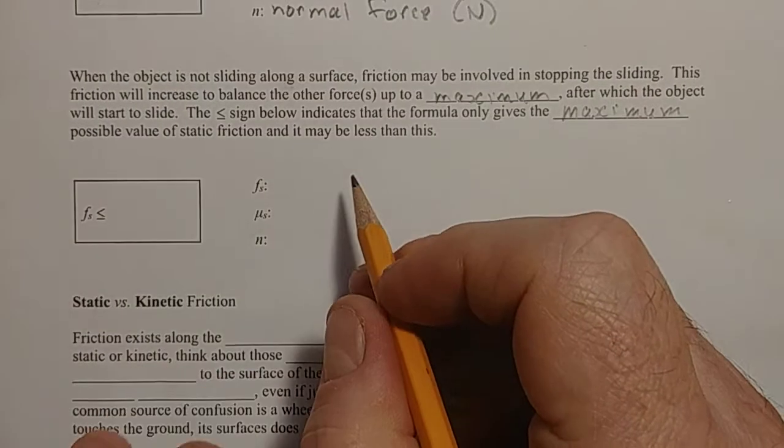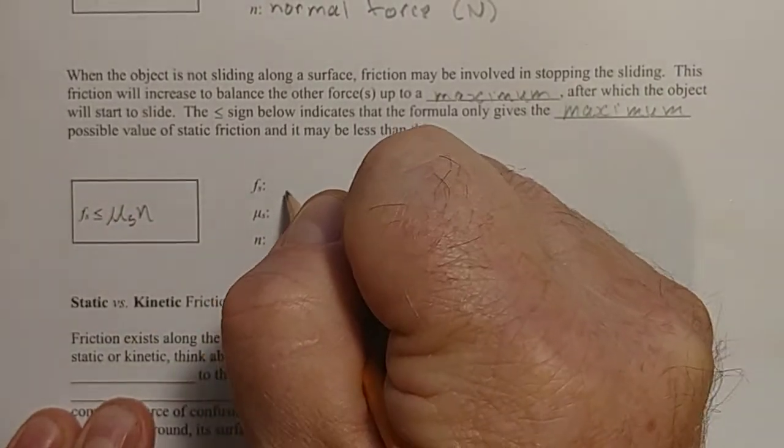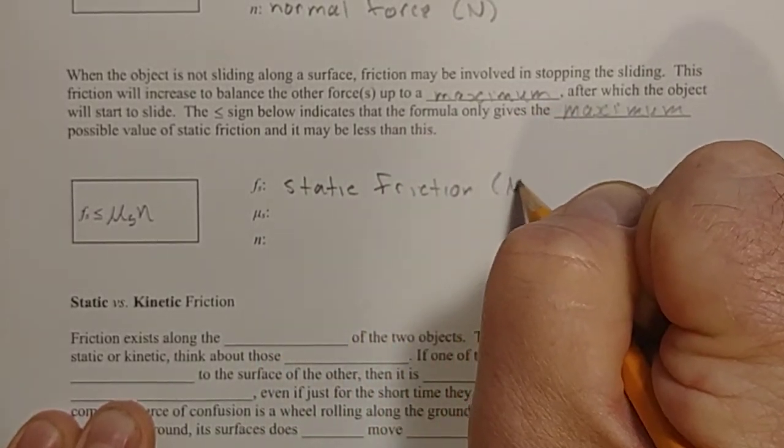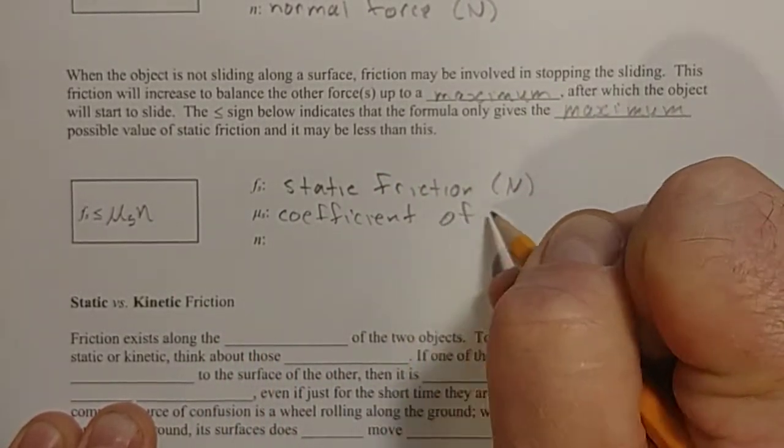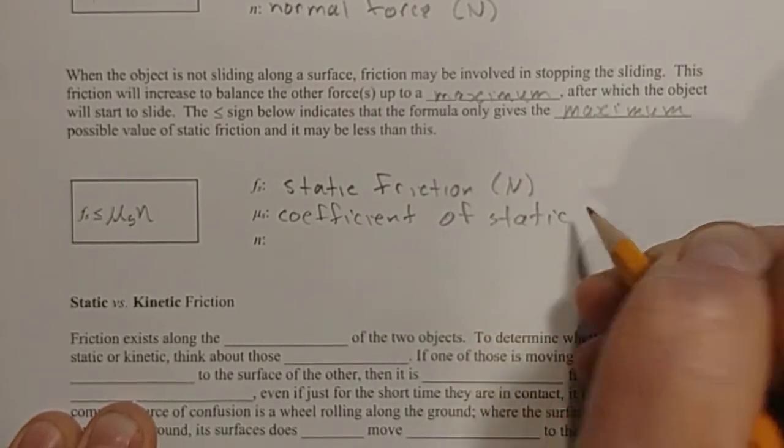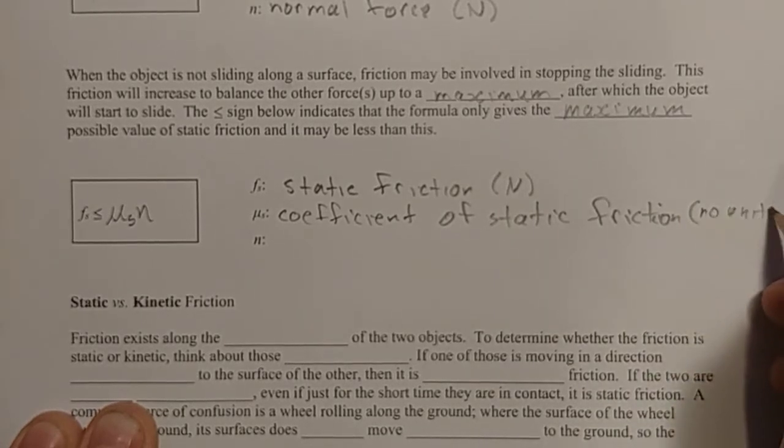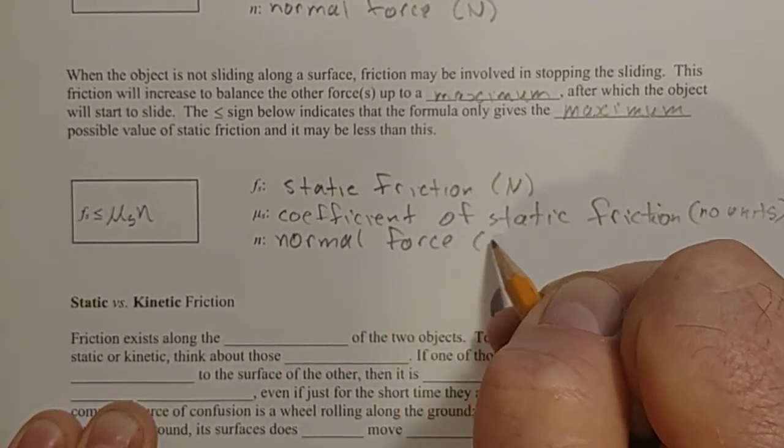So the less than or equal to sign below tells us that the formula only gives the maximum possible value of static friction. And static friction could be less than this. So it's a very similar formula. We have mu s times n. F s is now static friction, which is measured in newtons. Mu s is the coefficient of static friction. And it has no units. It is simply a ratio, and n is the normal force, which is measured in newtons.